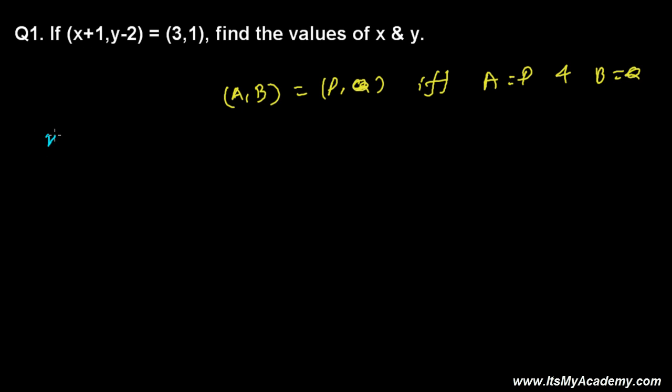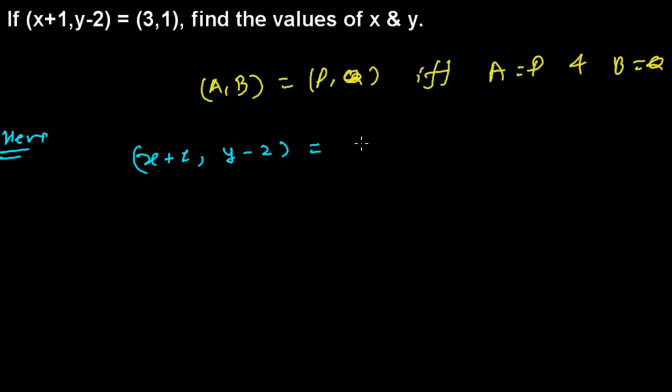So in this case we have two ordered pairs here. According to the equation we have two ordered pairs (x+1, y-2) and is equal with (3,1). Then find the values of x and y. So, very simple.